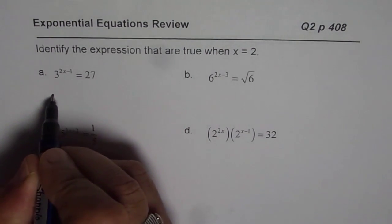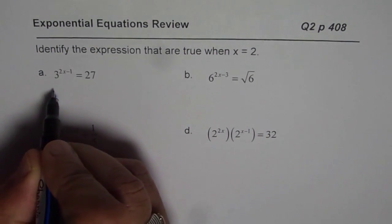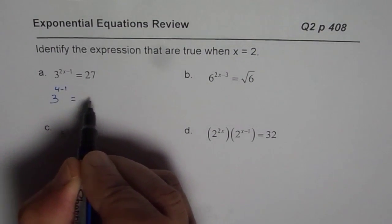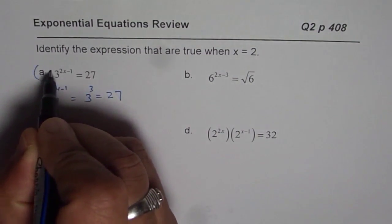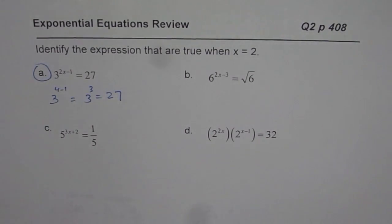So the very first one is 3 to the power of 2x, that means 2 times 2 is 4, 4 minus 1. 3 to the power of 3 is indeed 27. So that is absolutely correct, right?